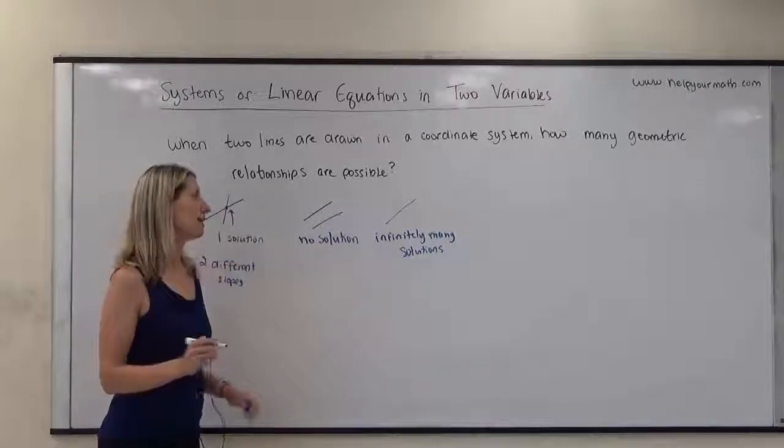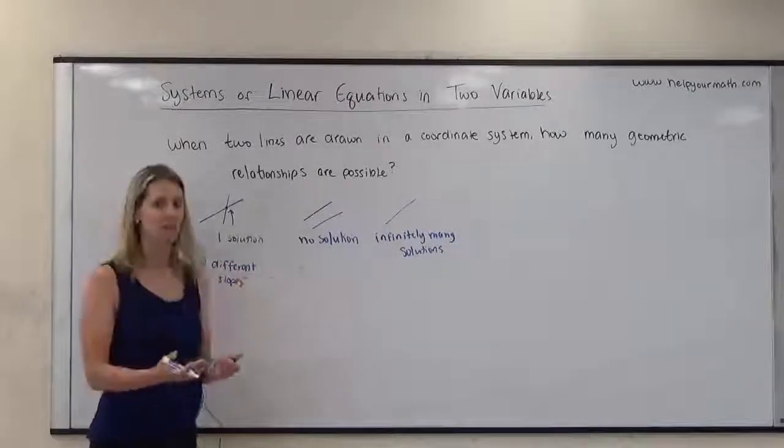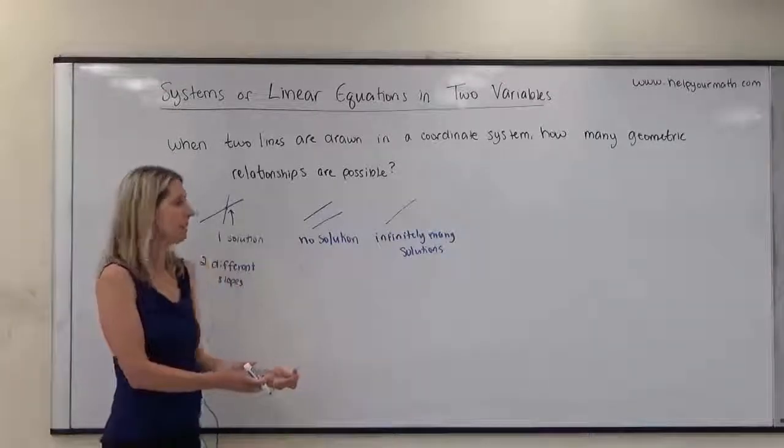For no solution and infinitely many solutions, they have the same slope. In both cases, they have the same slope. So what's the difference between no solution and infinitely many solutions?